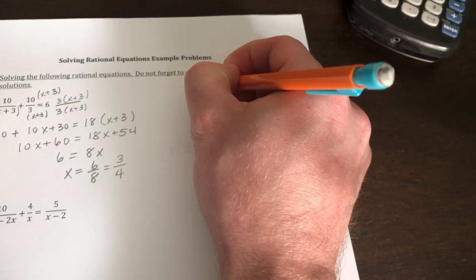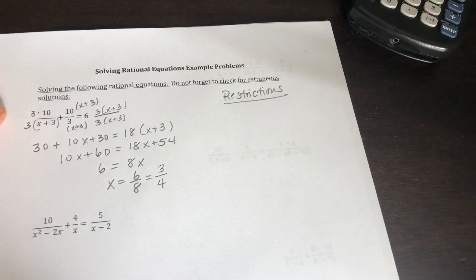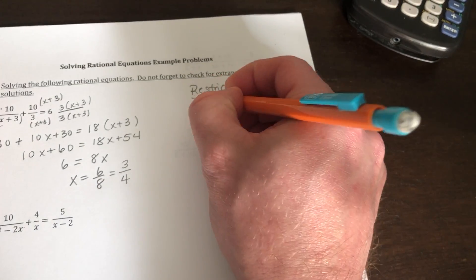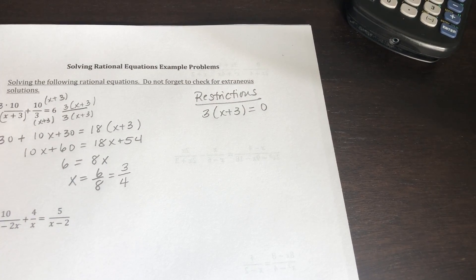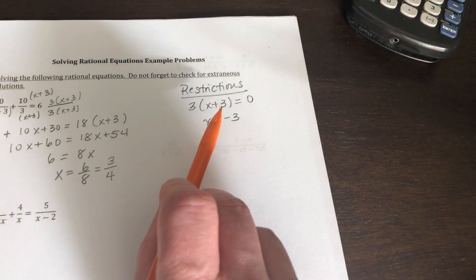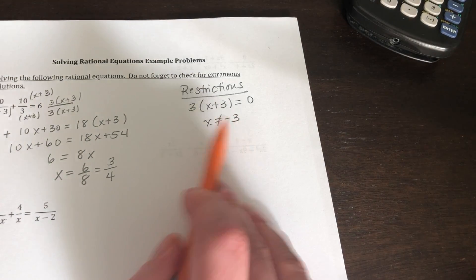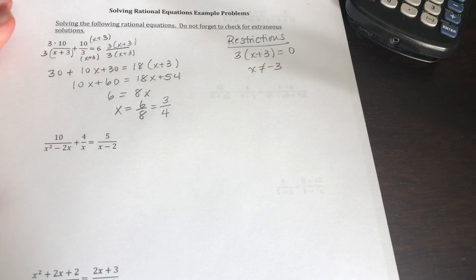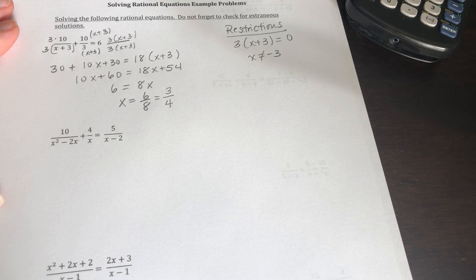Now we have to do restrictions. Our restrictions are where the denominator is equal to 0. Using our LCD, least common denominator, x cannot equal negative 3. You solve for the restriction and then note what x can't equal. If our answer is a restriction, we cross it out. Sometimes these come out to be no solution because everything is a restriction, so don't be surprised by that.